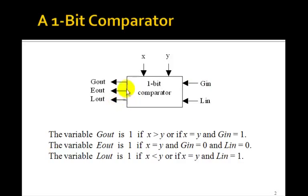And Lout is going to be 1 if x is less than y, that is, if x is 0, y is 1. Or if they're equal, x is equal to y, then Lout will just be Lin.